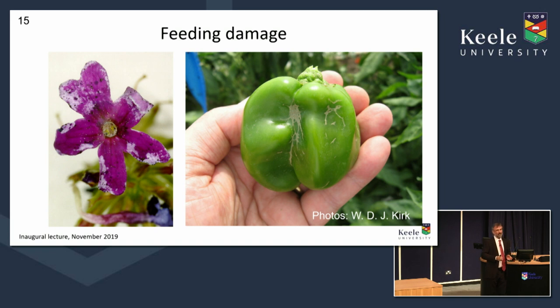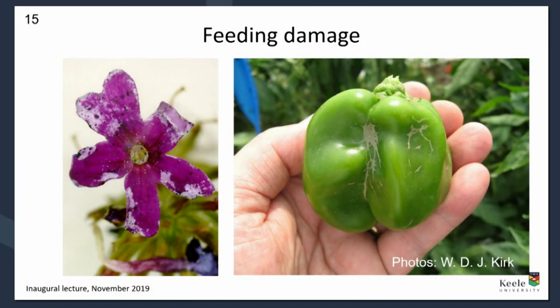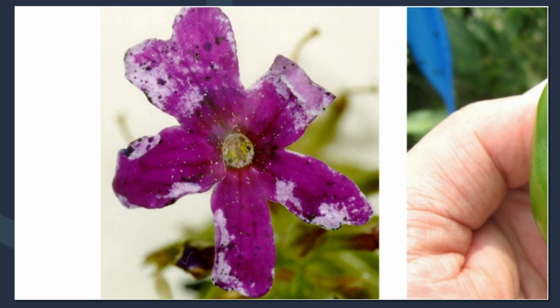Worldwide, thrips are very important crop pests. We all know about caterpillars or aphids, but thrips are just below the top tier — still very important. By feeding, they can suck out pigment from petals, making ornamental plants unsaleable. They produce little faecal droplets — dark purplish spots around the flower. They breed extremely fast, are resistant to insecticides, and are very difficult to control. Because they're very small, they're hidden away, so you often don't know they've arrived in your crop until you start seeing the damage.